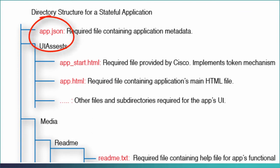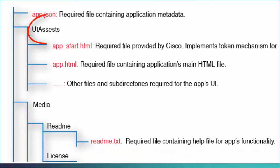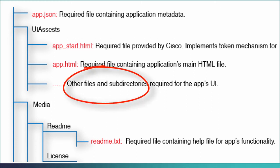The first required file is app.json, which contains the information required by the Cisco App Center to recognize and validate the app. The second is the UI Assets folder, which contains the required app.start.html file with cookie information to implement single sign-on, the required app.html file containing the app's main HTML file, and other files and subdirectories required for the app's UI.